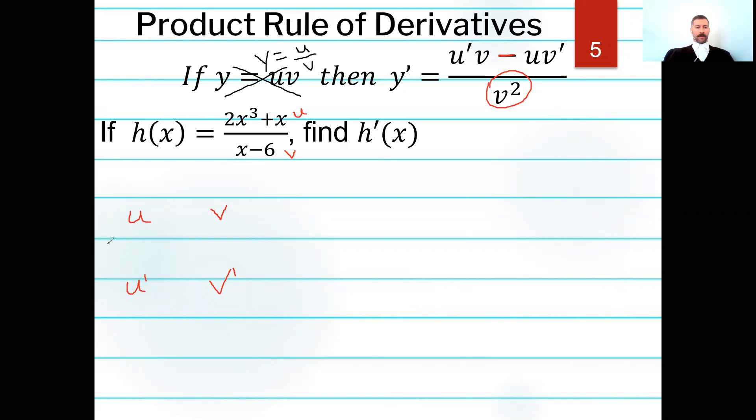Let's take a look. u is 2x to the third plus x. v is x minus 6. And now let's take the derivative. Power rule here, 3 times 2 is 6. Subtract 1 from that, 6x squared. And then v, the derivative of 1x is just 1 and negative 6 becomes 0. So I can consider that like minus 0, but I don't need that. It's just 1. So here are my derivatives. Now let's put this all in order.